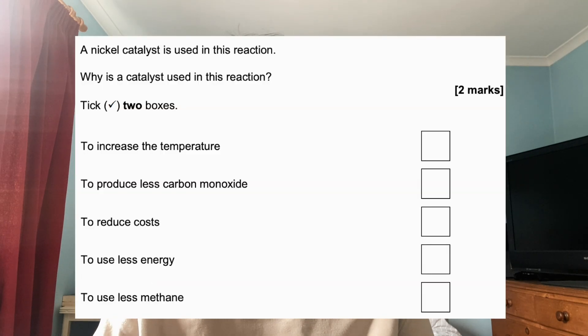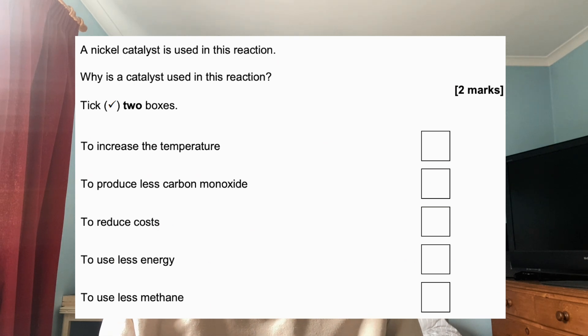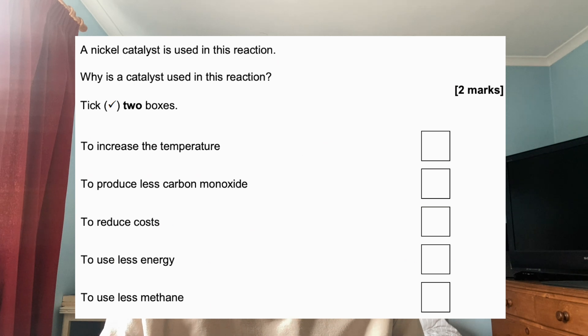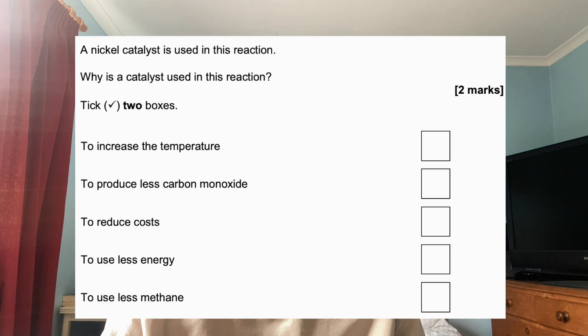Question two is a multiple choice question: A nickel catalyst is used in this reaction. Why is a catalyst used? Options are: to increase the temperature, to produce less carbon monoxide, to reduce costs, to use less energy, or to use less methane. Tick two boxes — be sure to read the question carefully as some questions say tick one box and some say tick two, and you don't want to miss any marks.